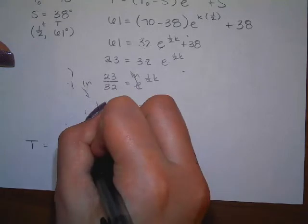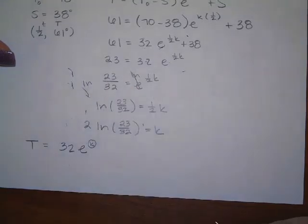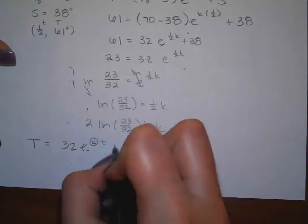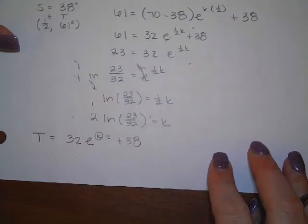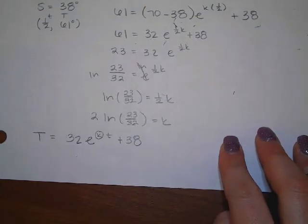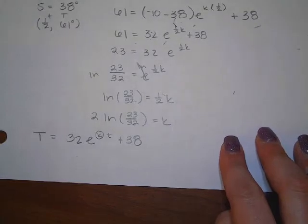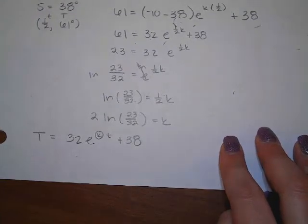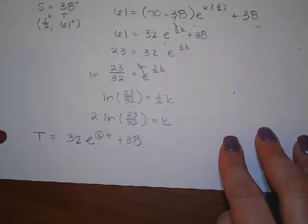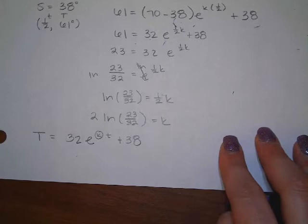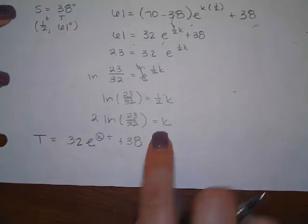So, 32 e to the 0.5k plus 38. Subtract 38 over, so 23 equals 32 e to the 0.5k. Divide by 32, so 23/32 equals e to the 0.5k. Natural log both sides, ln(23/32) equals 0.5k. Multiply by 2, so 2 ln(23/32) equals k. So, what I'm going to do is I'm just going to figure out what this decimal is. Then, I'm not going to use this decimal to write down on paper, but I am going to store this as K.